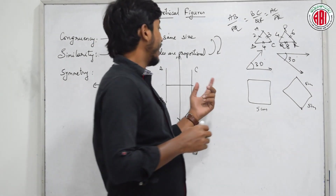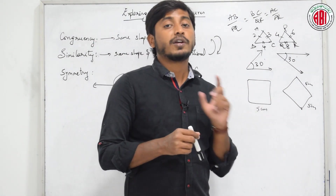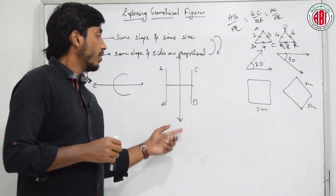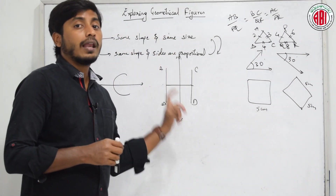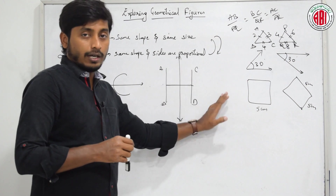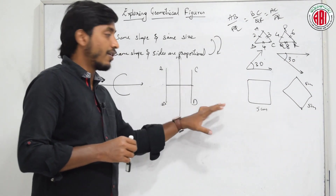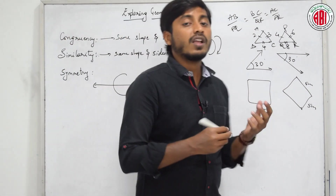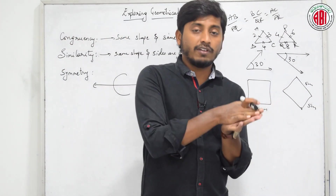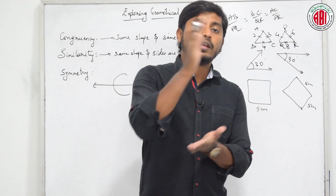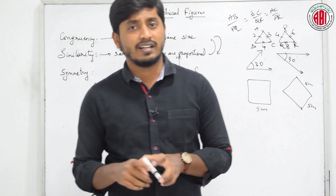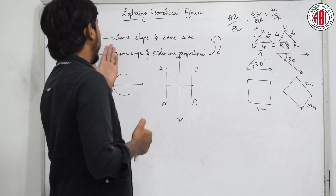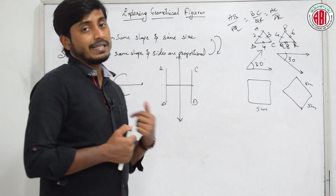You would have learned different types of symmetry: point symmetry, line symmetry, and plane symmetry. Point symmetry means everything is rotated with respect to a particular point. Line symmetry means we rotate with respect to a line - whatever is on one side comes to the other side. If it is plane symmetry, the plane is fixed and the whole shape reverses.